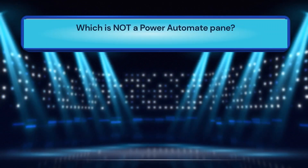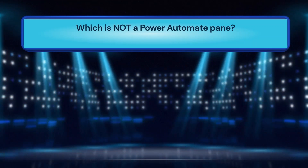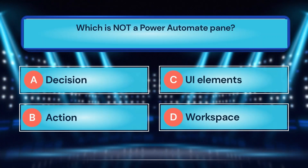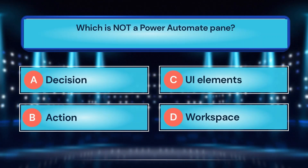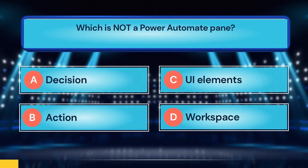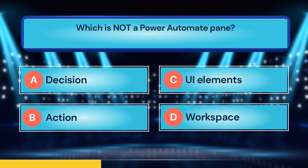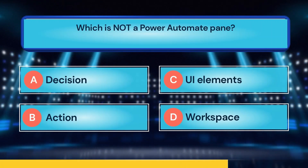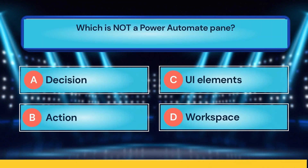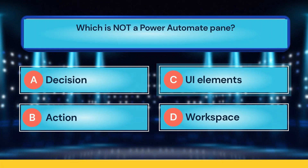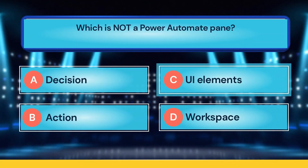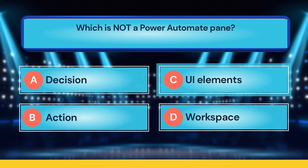Which is not a Power Automate pane? A. Decision. B. Action. C. UI elements. D. Workspace. Time is up! The correct answer is A, decision.